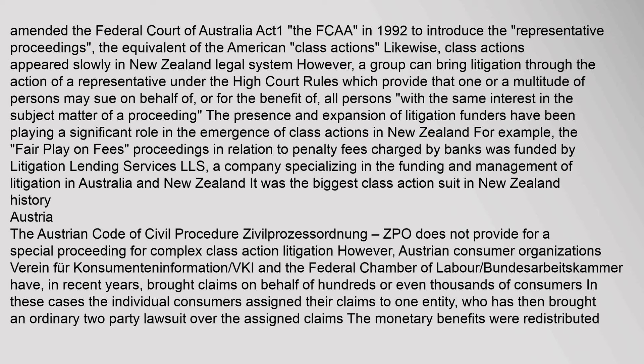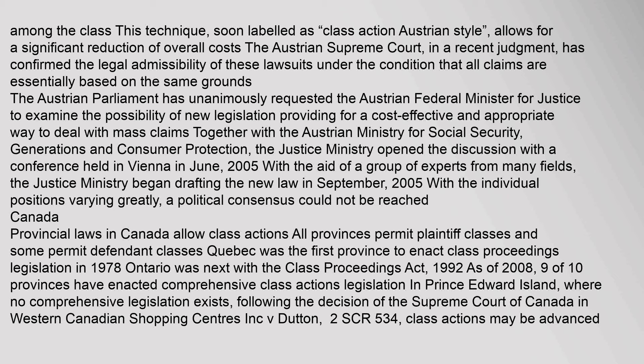In Austria, the Austrian Code of Civil Procedure allows a class action technique that permits significant reduction of overall costs. The Austrian Supreme Court confirmed the legal admissibility of these lawsuits under the condition that all claims are essentially based on the same grounds. The Austrian Parliament requested the Federal Minister for Justice to examine the possibility of new legislation for dealing with mass claims. The Justice Ministry opened discussion with a conference in Vienna in June 2005, and began drafting new law in September 2005, though a political consensus could not be reached.